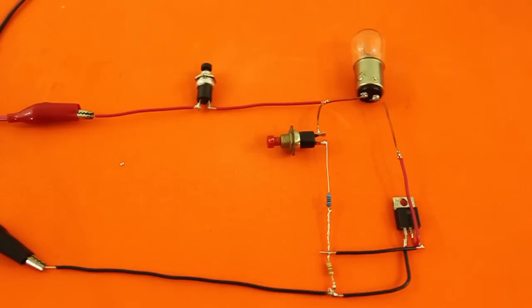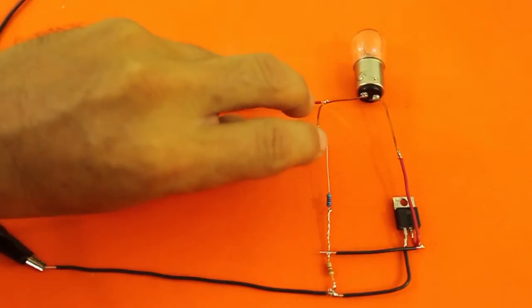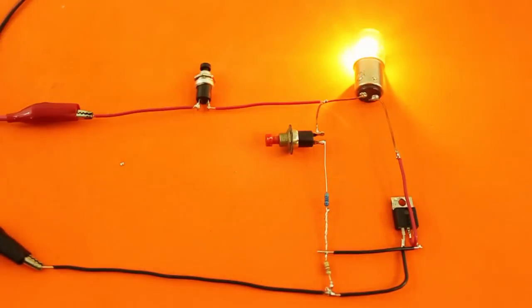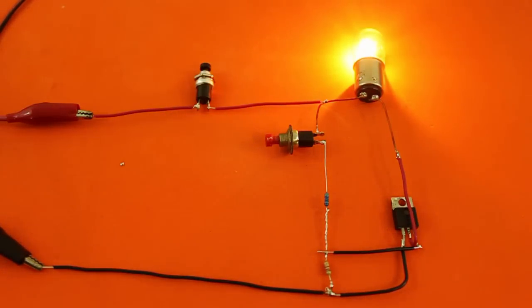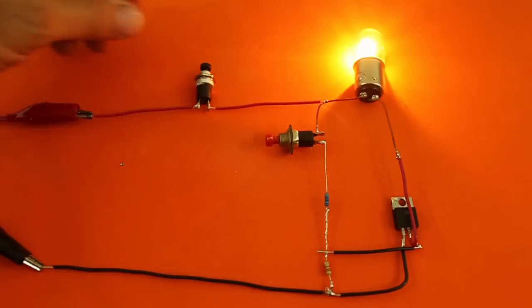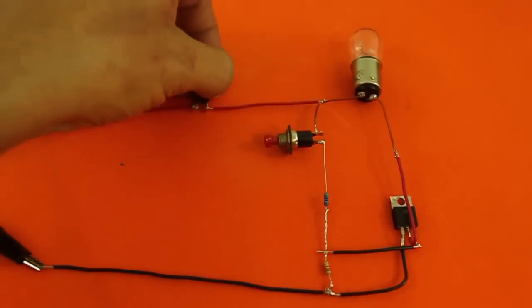So let's turn on the lamp by pressing the normally open switch. And to turn it off, we must cut the current by pressing the normally closed switch.